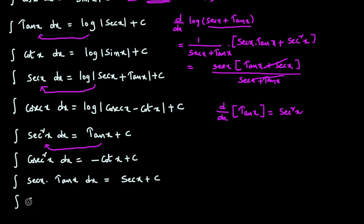The tenth and last formula in this set: integral of cosecant x into cot x dx is minus cosecant x plus c. If you differentiate the right-hand side, minus cosecant x plus c, you will get cosecant x into cot x. Because of this, we say integral of cosecant x into cot x dx is minus cosecant x plus c.